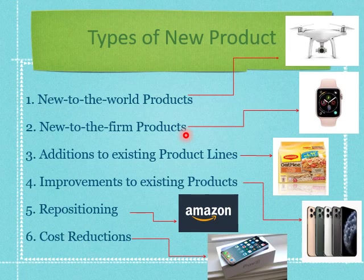New to the firm means it is the first time the company actually creates or adds that particular product to their organization. For example, when Apple created their first-ever smartwatch, the watch itself is not a new product to the world, but to Apple company, they had never produced a watch before. So when they added the iWatch, that is considered a product that is new to the firm.